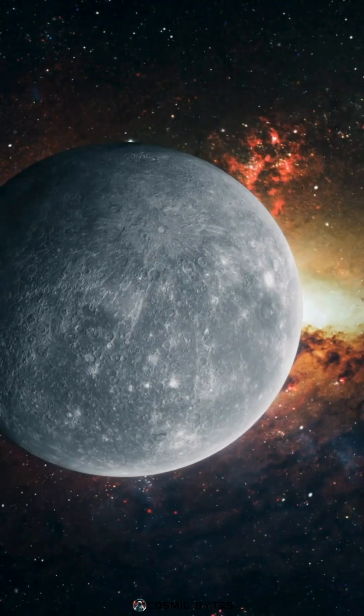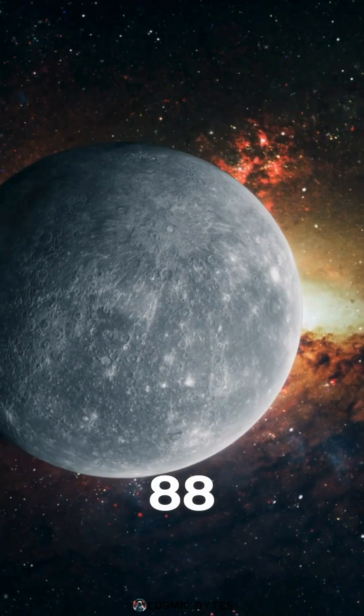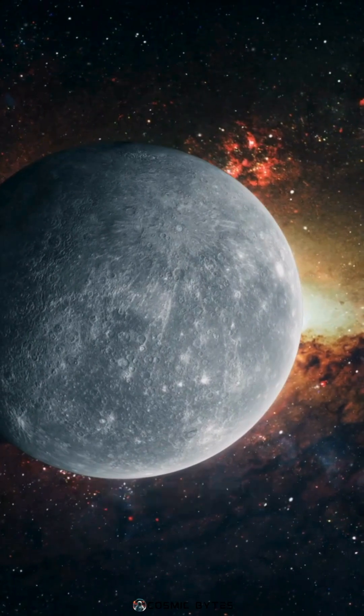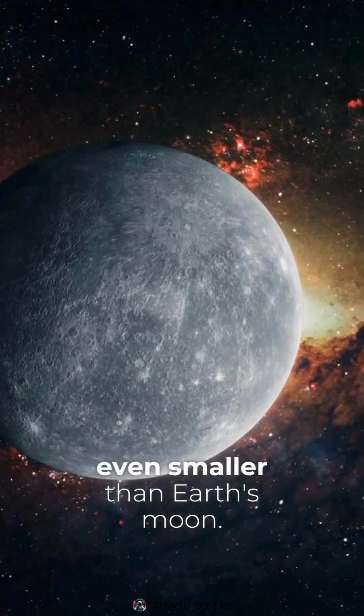Mercury is the closest planet to the Sun and completes an orbit in just 88 days. It's the smallest planet in our solar system, even smaller than Earth's moon.